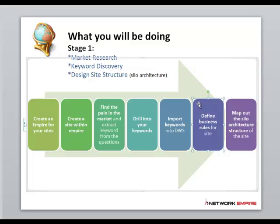We'll import those keywords and then configure the project by defining our business rules for the site. The reason why we define business rules is we want to make sure that every single keyword we target is profitable. We want to understand how long it's going to take us to get ranked for that keyword, how much it's going to cost, and how much content we need to develop to get that keyword ranked with far fewer inbound links. Once we understand all that information, we'll map out the silo architecture structure of the site.